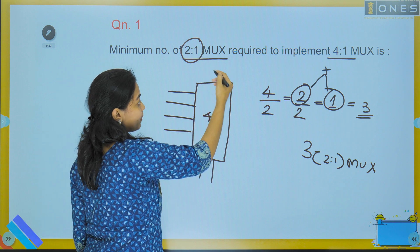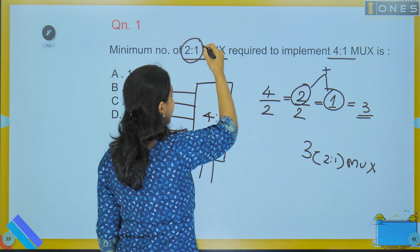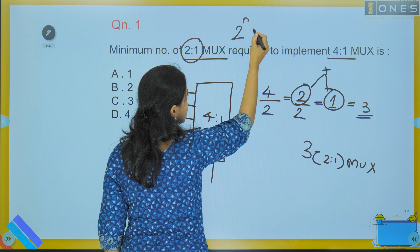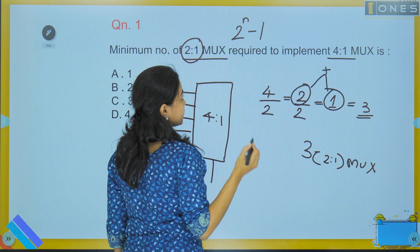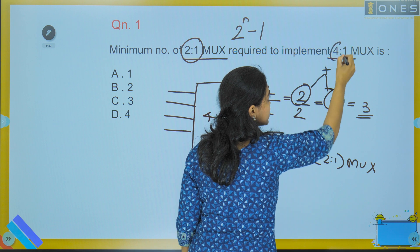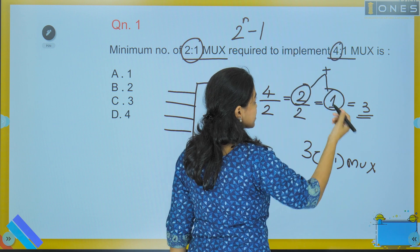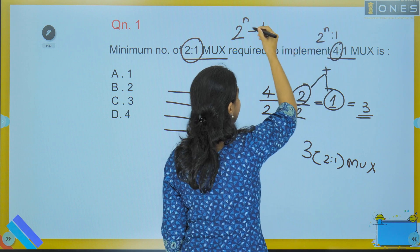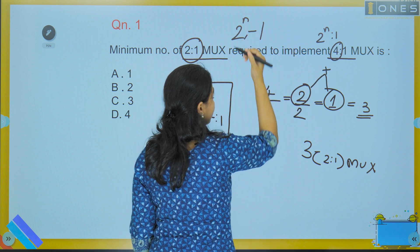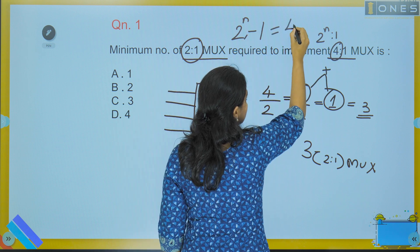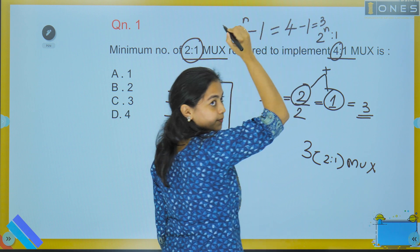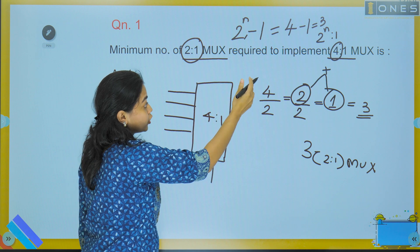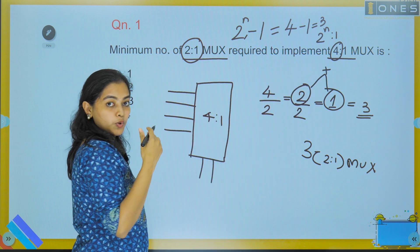We have a generalized form. If you need to implement a bigger mux using only 2-to-1 muxes, you can use this equation: 2 raised to n minus 1. For 4-to-1, that is 4 minus 1 equals 3. So 3 muxes are needed to implement a 4-to-1 mux using 2-to-1 muxes.